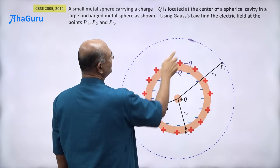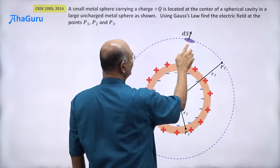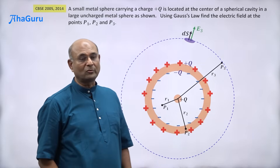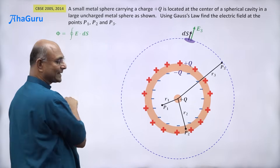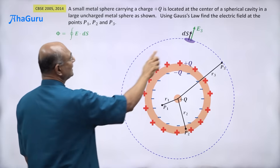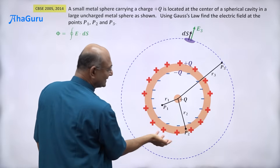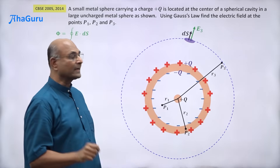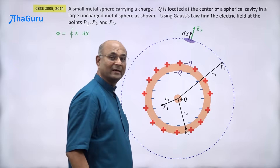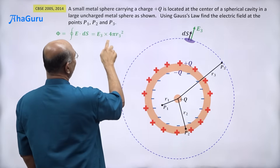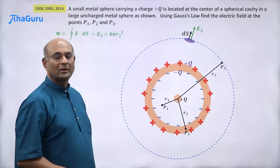If I pick a small surface element ds, it is radially outward, and the electric field E3 is also radially outward, so both point in the same direction. By Gauss's law we calculate the flux: the integral of E dot ds. Since E and ds are in the same direction and E is constant over the surface, we get E times the surface area, which is 4πr₃². So the flux is E3 times 4πr₃².